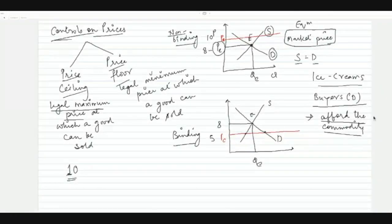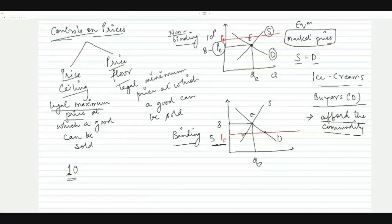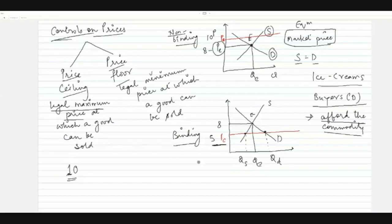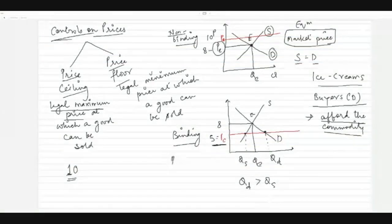Let's see whether the government's agenda — making the commodity affordable for every buyer — is actually being achieved. At the new price ceiling of rupees 5, let's check the level of demand and the level of supply. At price PC equal to rupees 5, quantity demanded is greater than quantity supplied.